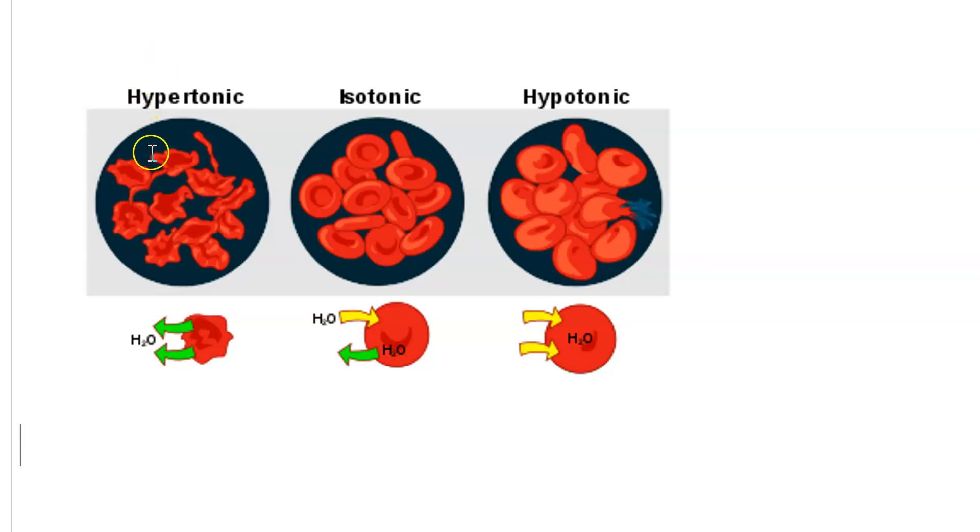On the other hand, in a hypertonic solution, this is where the water outside the cell is much saltier. There's a net movement of water out of the cell, again, to try to concentrate the solution inside the cell. And the cells end up all squished and sort of spiky looking. This is a process called crenation. This happens when you swim in the ocean.